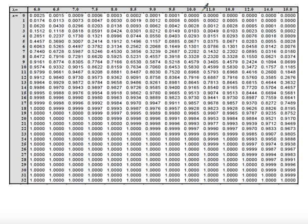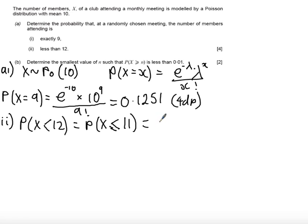Let's have a look in the tables. The mean is 10, so using a highlighter, just indicate we're going to read probabilities up to this column. Probability X is less than or equal to 11, just reading across from 11, we should get an answer of 0.6968.